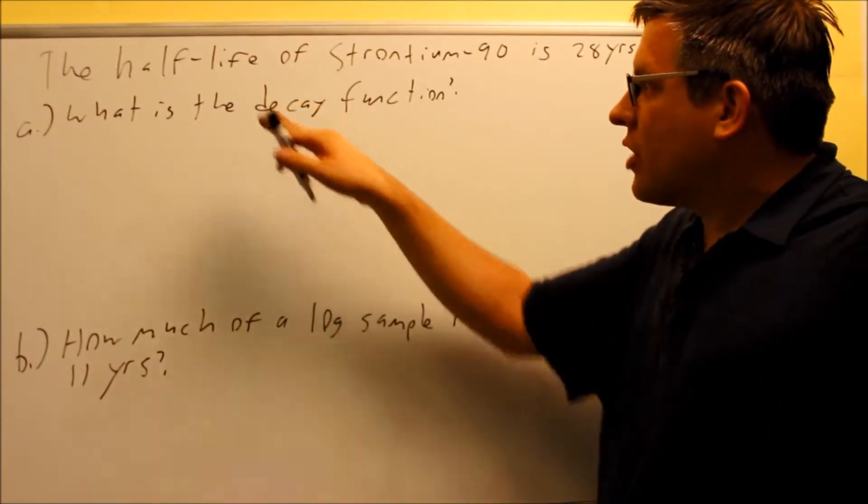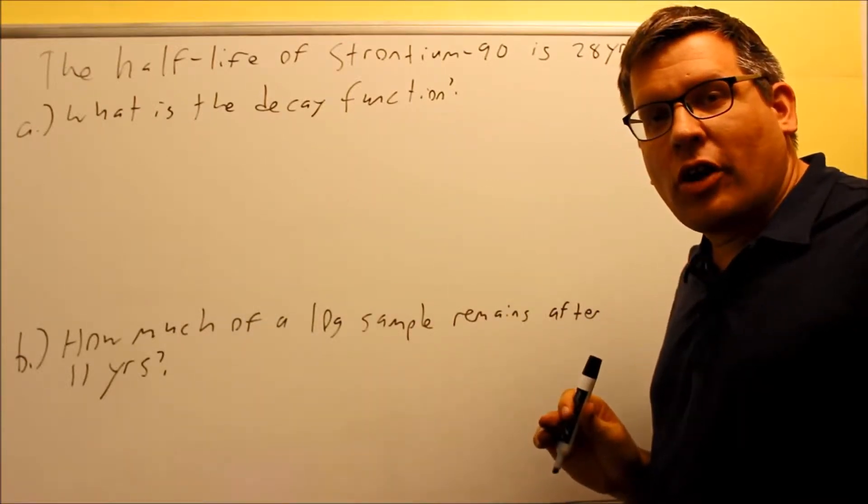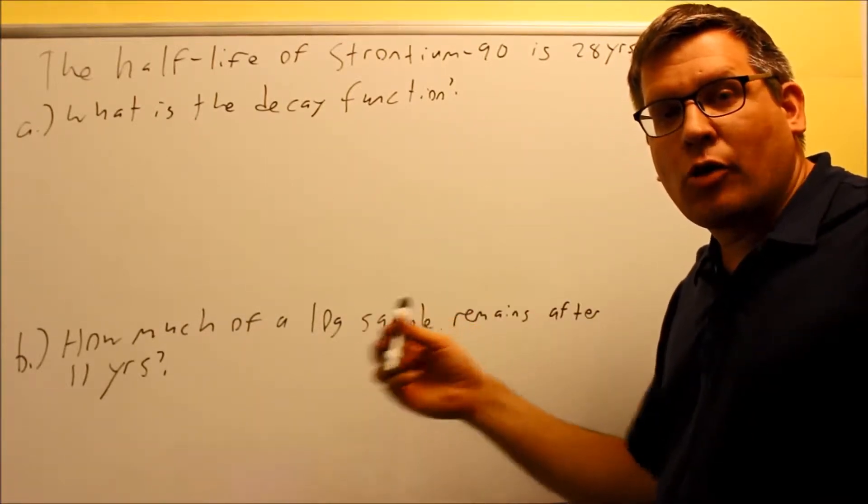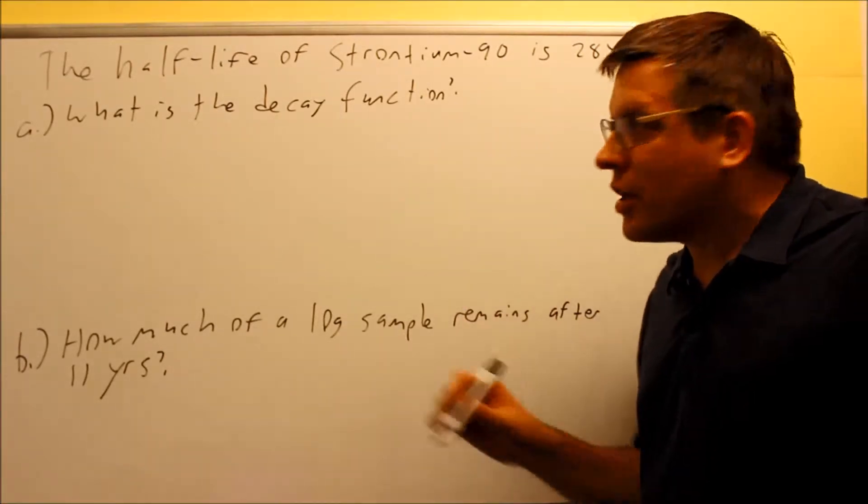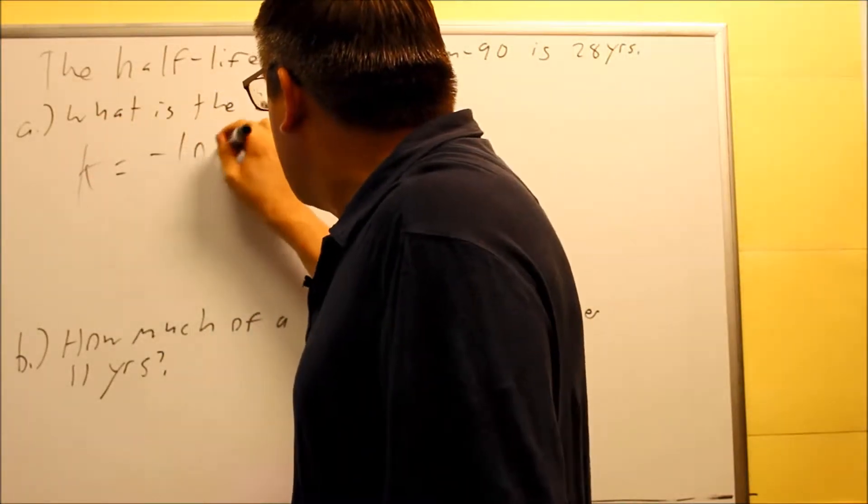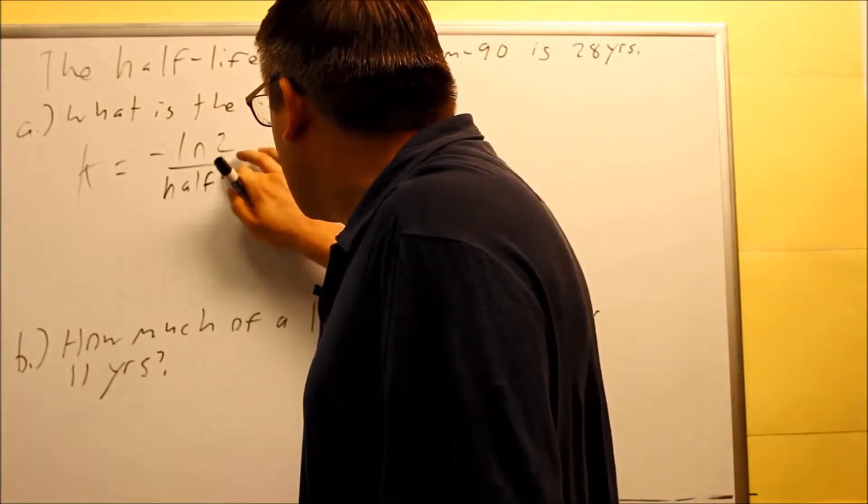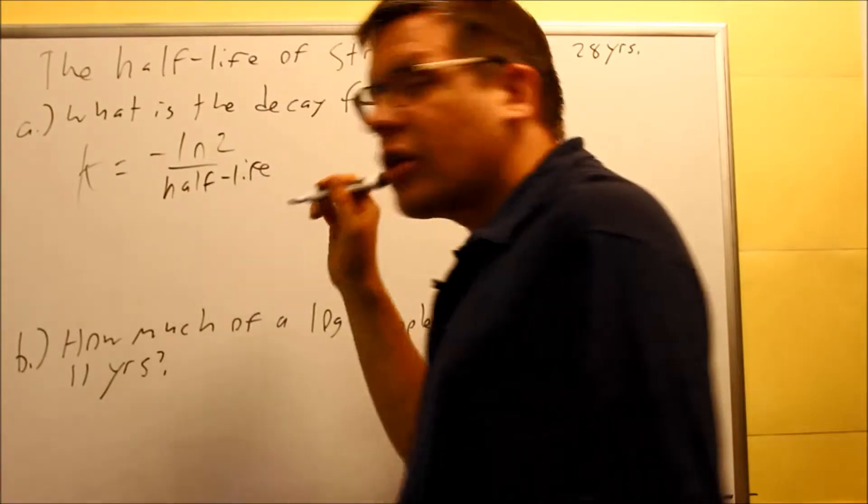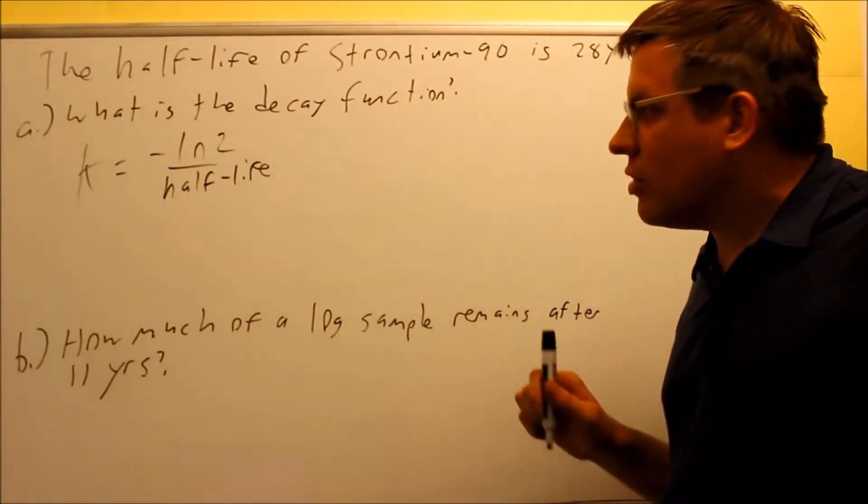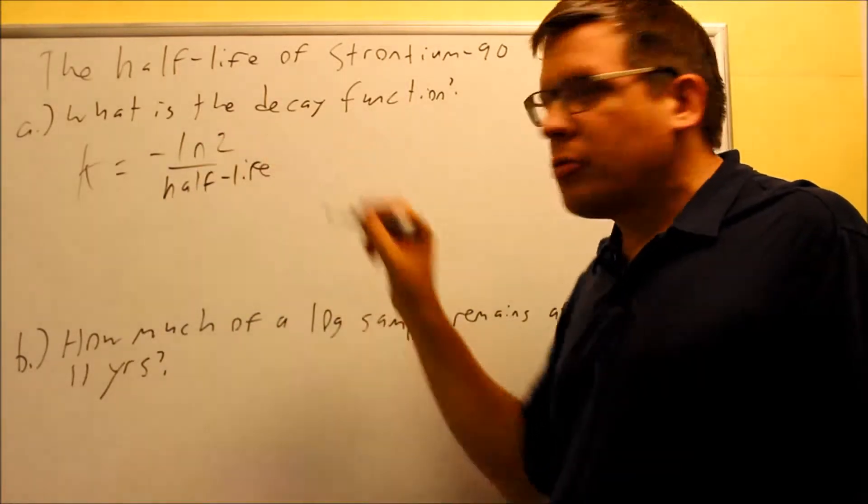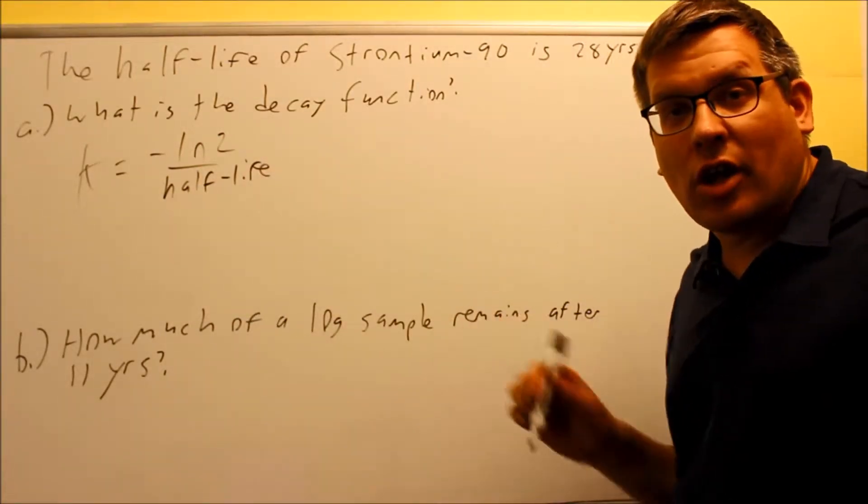With problems like this, we actually have a special k-value for half-life problems. The k-value represents our decay constant, and we have a formula to come up with our decay constant. That formula is negative ln 2 over the half-life. The half-life they're going to give you in these problems will always be provided in terms of years, and so if we have this formula, that will tell us what the decay constant, or the k-value, is going to be.